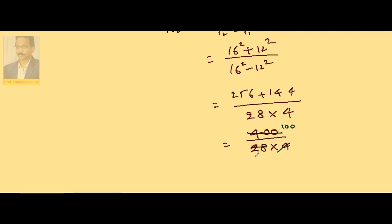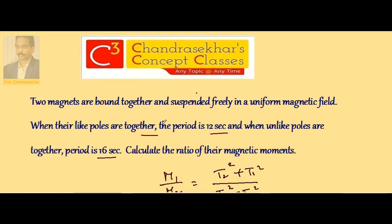Again with 4, 4 sevens, 4 twenty-fives. So answer is 25 is to 7. The ratio of the magnetic moments of the two magnets used is 25 is to 7.